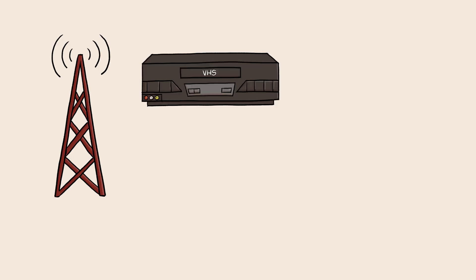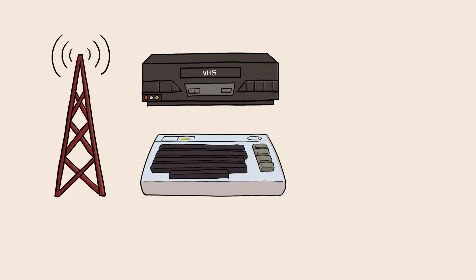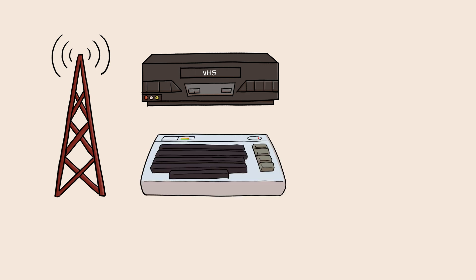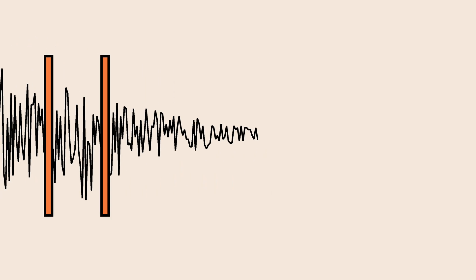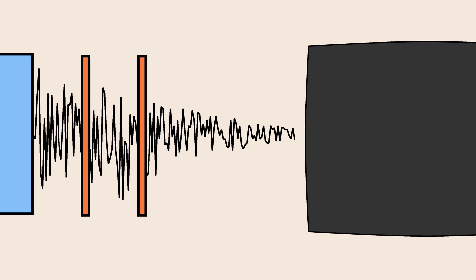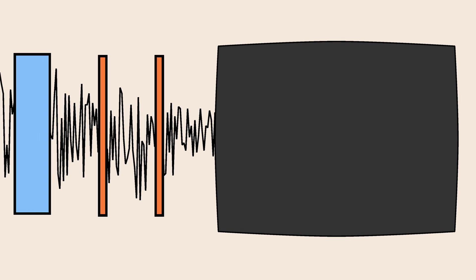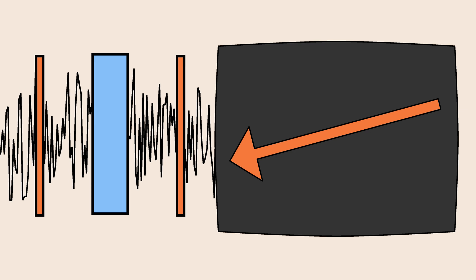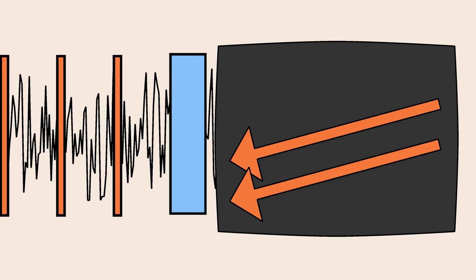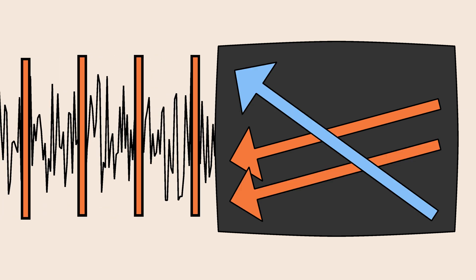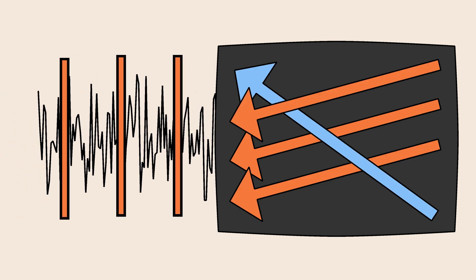When a TV station, VCR, or home computer sends image data to a CRT, they send not only the strength of the electron stream for each point on the screen, but also horizontal and vertical sync signals. The electron gun synchronizes its movement with these signals, ensuring that the stream of image data being sent is drawn correctly.